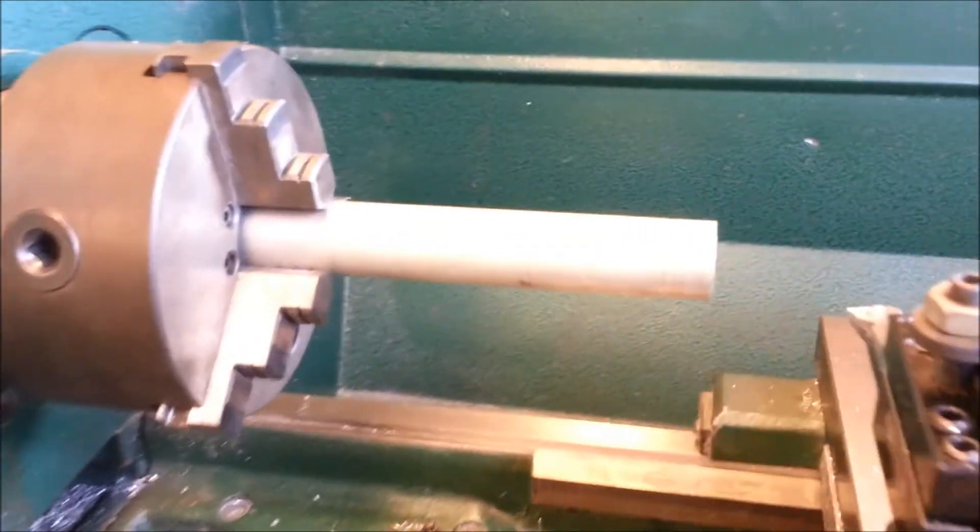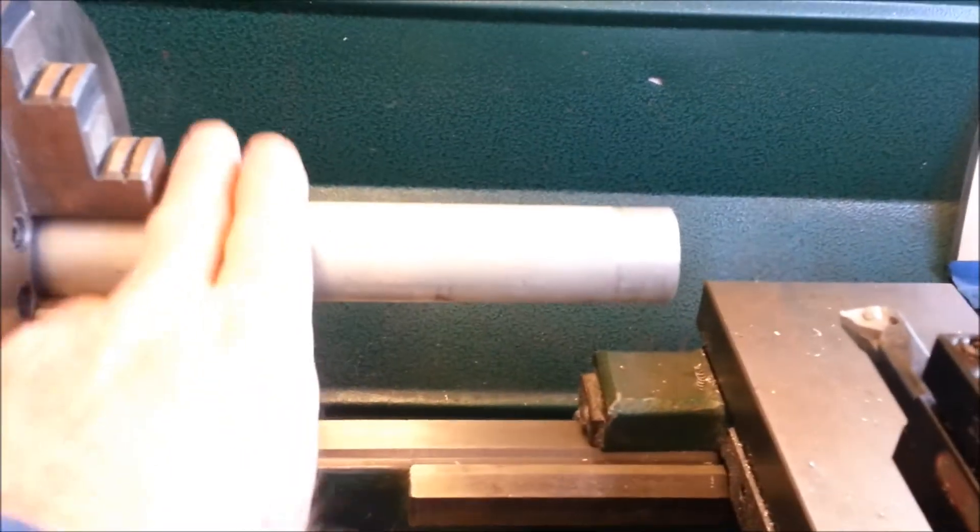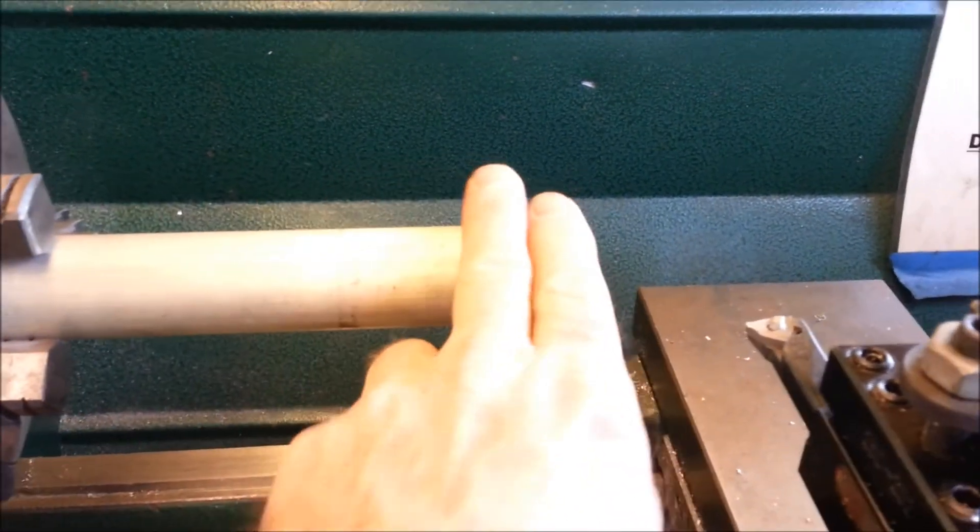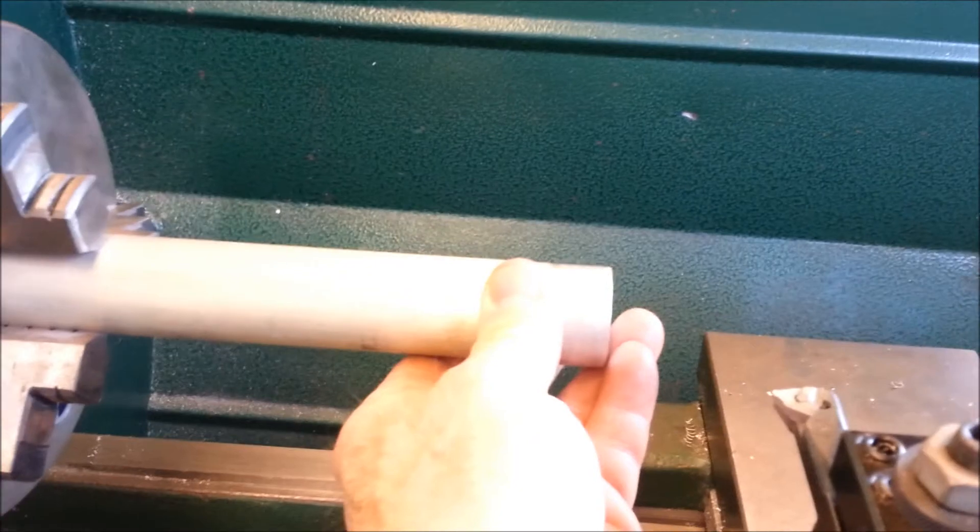Try not to have your stock sticking out too far. The rule of thumb is two fingers, which is around two inches. You can notice that this is sticking out way too far. There's just not enough support in the end being held by the three-jaw chuck to have all that pressure put on the stock of this length.